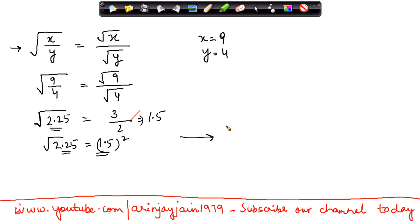Let's look at it like this: under root of x square is equal to x. Here x is 1.5, so if this side has to be equated to that side, then I can also write this as 1.5 square under root.